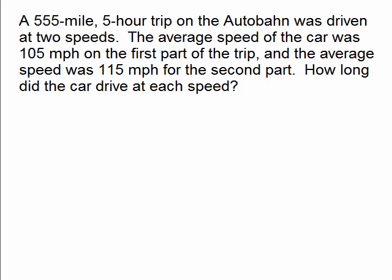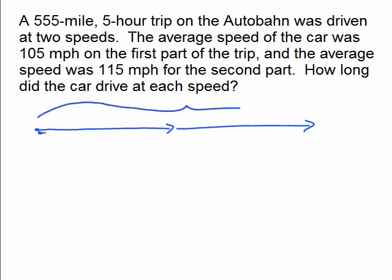Here's another one. A 555-mile, five-hour trip on the Autobahn was driven at two speeds. The average speed of the car was 105 miles per hour on the first part of the trip, and the average speed was 115 miles per hour for the second part. How long did the car drive at each speed? Now this doesn't say it's half at 105 and half at 115. It just means there's a first and a second part, and I don't really know which is longer. But the picture is, it's going for a while, and then the speed changes, and it's going some more. I really don't know which of these is longer, but I do know that altogether, that's 555 miles.